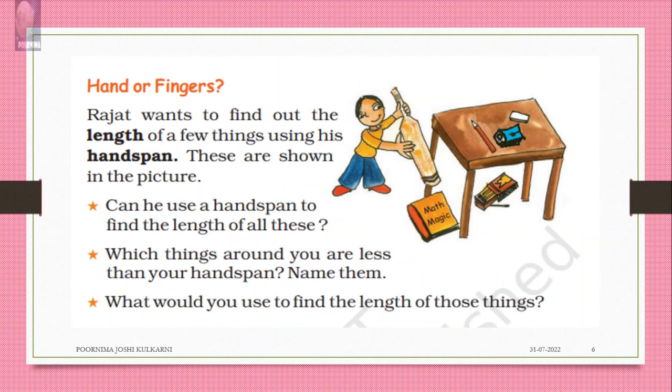Using our fingers, Rajit wants to find out the length of a few things using his hand span. These are shown in the picture. Can he use the hand span to find the length of all these? Which things around you are less than your hand span? Name them. Less than your hand span: eraser, matchstick. What would you use to find the length of those things? Scale.